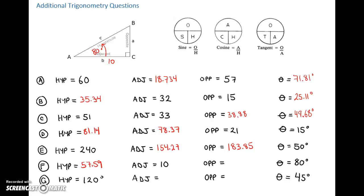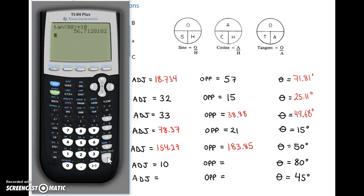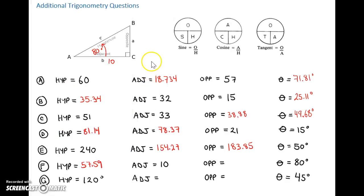Now we need the opposite. We've got the adjacent, so let's use tan — the opposite equals tan of the angle times the adjacent. Tan of 80 times the adjacent of 10 gives us 56.71. At a really steep angle, you can see that the hypotenuse is very close to the opposite.